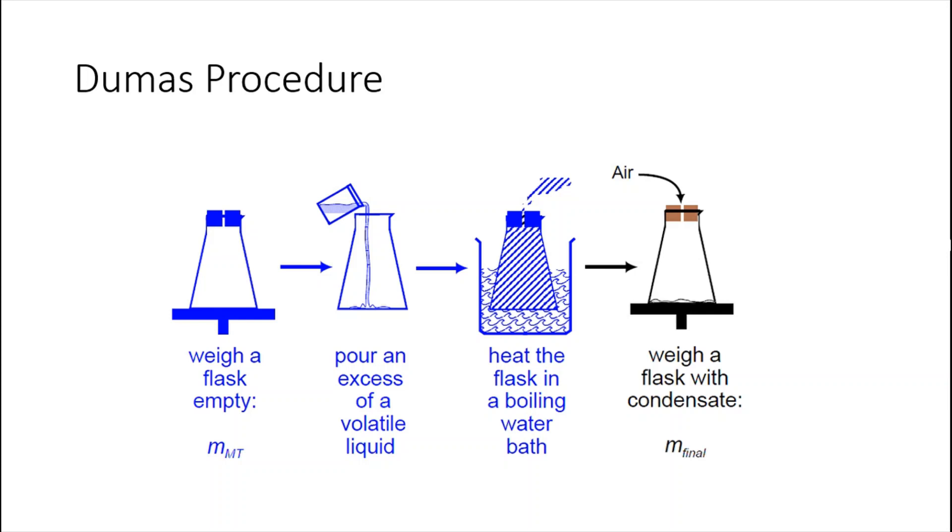Some of the vapor will actually escape by effusion through that narrow opening until the pressure equalizes inside and outside. And all that remains inside the flask is the vaporized residual liquid. We will then let it condense back to liquid and weigh what is the residual liquid in there, which should be equivalent to whatever the vapor was when it was all vaporized.